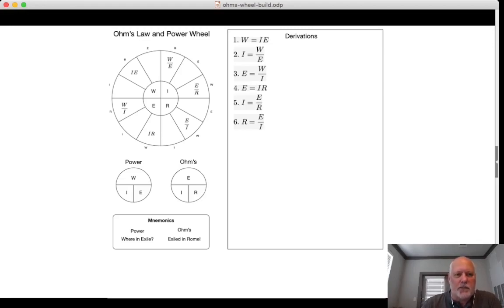So right now I know that W is equal to IE in this quadrant. That's for sure. I don't have I though, but I do have E. So we've got to get I. And I've already used my power wheel. So now I'm going to go over here to Ohm's law and say, what is I? I is equal to E over R.